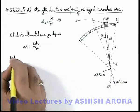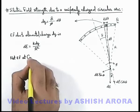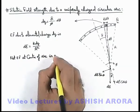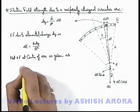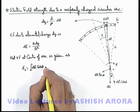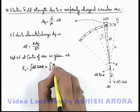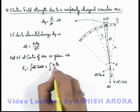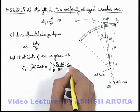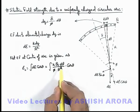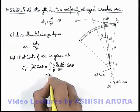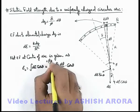So we can write net electric field at center of arc is given as E at center will be integration of dE cos theta. We just substitute the values. This will be integration of k dq, we can write q upon phi d theta, by r square into cos theta. And limits of integration will be equal to the angle theta that will be applied for the angle theta, that will be integrated from one end to the other, that will be minus phi by 2 to plus phi by 2.